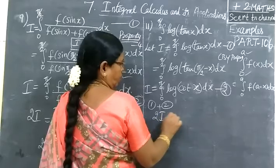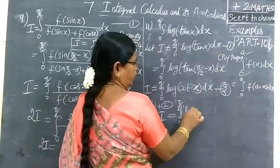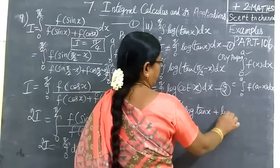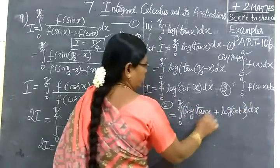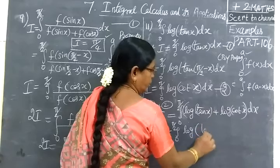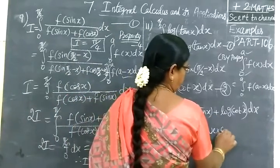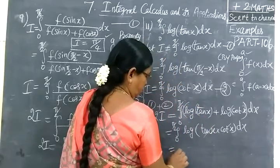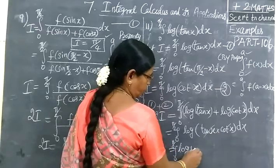2I equal to integral 0 to 5 by 2, log tan X plus log cot X dx. So log m plus log n is log mn. Integral 0 to 5 by 2 log of tan X into cot X. Cot X can be written as 1 by tan X. So getting cancelled. Integral 0 to 5 by 2 log 1. Log 1 means 0.